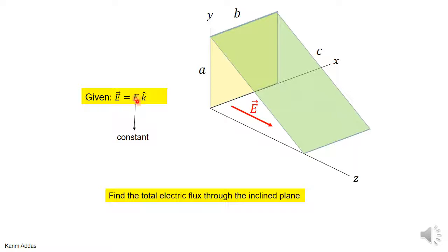The electric field is uniform — E is constant in the k-hat direction at every point in space. We want the electric flux through the surface with sides B and C, and we want to compare it to the flux through the surface with sides B and A.